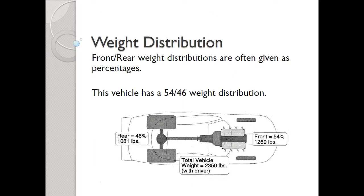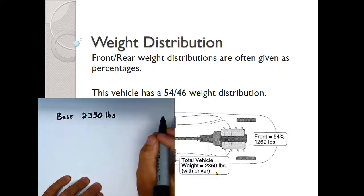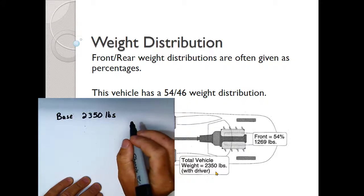Another nice application of percentages is weight distribution. Ratios like 54-46 are percentages even without a percent sign. For a vehicle, weight distribution is always given as front to rear. So a 54-46 distribution means the front holds 54% of the weight — slightly more due to the engine — and the rear holds 46%. The total vehicle weight of 2350 pounds is our base, and we want to verify the shown values.